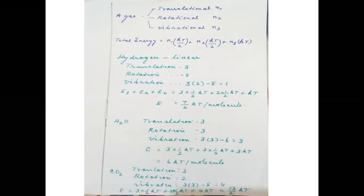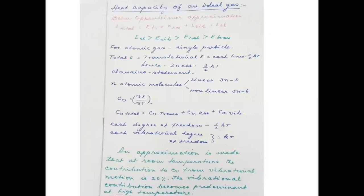This is how the total energy of gaseous systems is calculated. Next, how do we calculate the heat capacity of an ideal gas? The Born-Oppenheimer approximation states that the total energy of a system equals the sum of translational energy, rotational energy, vibrational energy, and electronic energy.